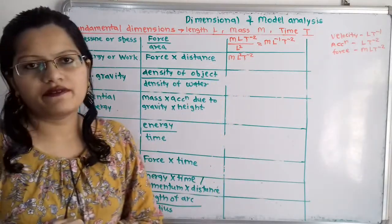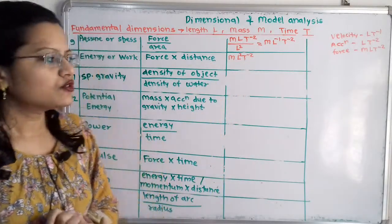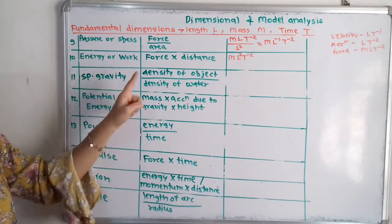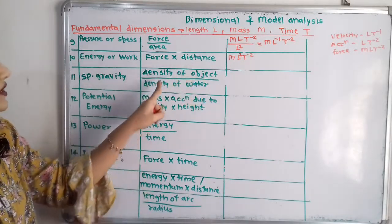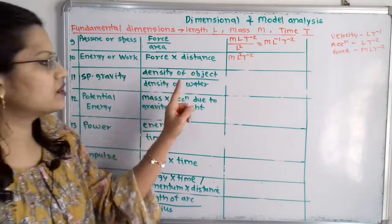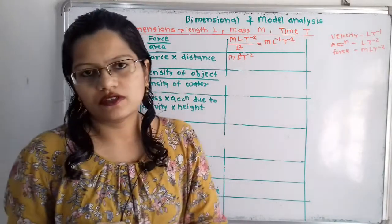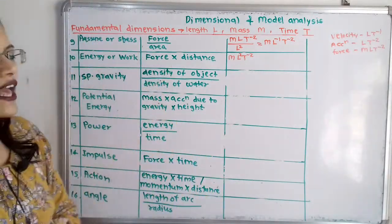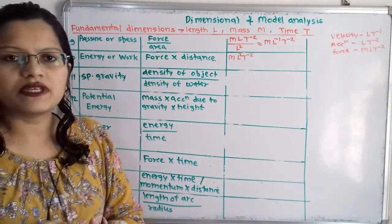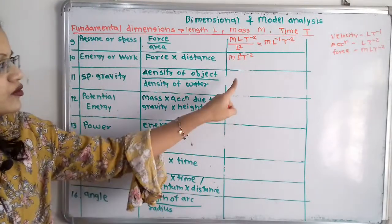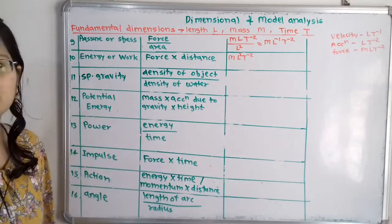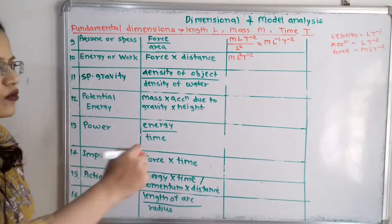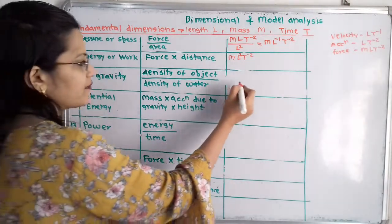Then specific gravity. Specific gravity is defined as density of object by density of water. Here density divided by density — density is getting cancelled, meaning there are no dimensions. So for no dimensions we write 1.